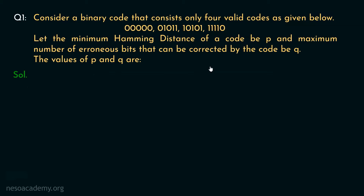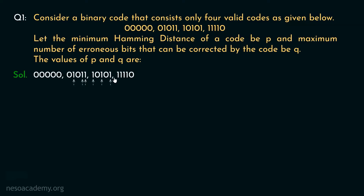In order to solve this particular question, first we will take the codes. We have to find out the minimum Hamming distance first. If we start looking for the Hamming distance of all these different codes — toggling this, this, and this bit of this code, we can obtain this particular code. Similarly, toggling the MSB, the LSB, and this particular bit, we can obtain this particular code. And finally, if we toggle all the four most significant bits, we will end up having this particular code. There is another way to find out the Hamming distance.